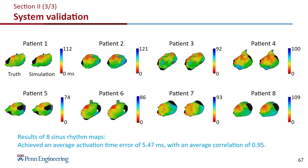We also have results for sinus rhythm with an average activation time error of 5 milliseconds and average correlation of 0.95. You may ask what's the practical use of having the model run well on sinus rhythm — well, it is very practical because most of the time when a patient with atrial fibrillation gets to the operating room, physicians will choose to cardiovert the patient to sinus rhythm. Having an accurate sinus rhythm map gives us an accurate voltage map to identify scar regions for the procedure.